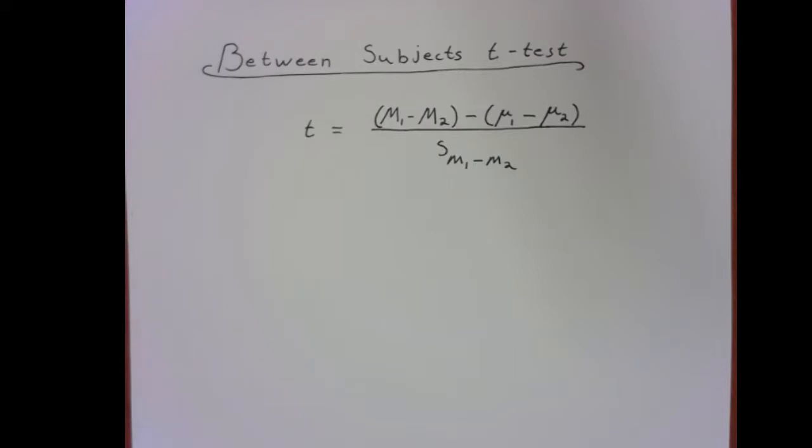So one place you might see this is if you have an experiment that has two groups, a basic control group and an experimental group, and you want to compare the two to see if there's a mean difference between the two groups, or stated a little bit more precisely, if both of your samples are coming from populations that have the same mean.